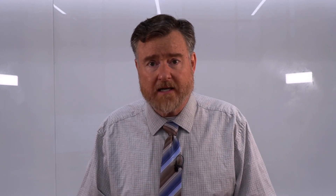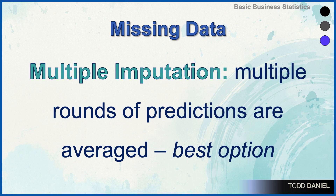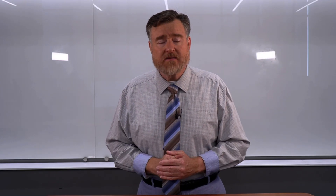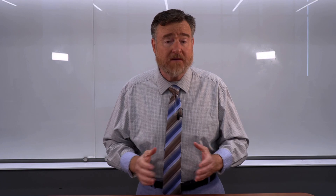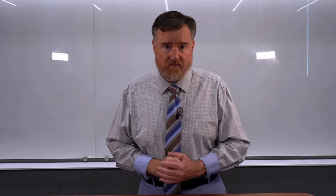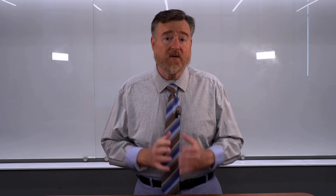Then there is multiple imputation, which has something in common with regression substitution. But instead of using a single regression equation to make a prediction, we use multiple rounds of predictions that are then averaged to give us what that score would have been if it were not missing. This multiple imputation is usually considered the best option. However, it is complex and can't be done except using some very specific software, so we won't be doing this in our course.